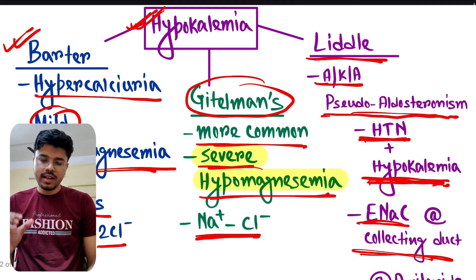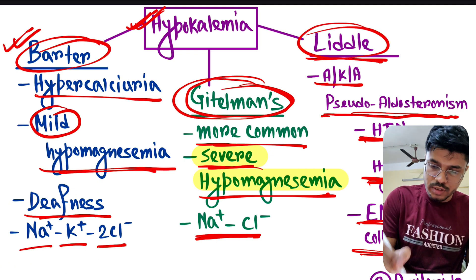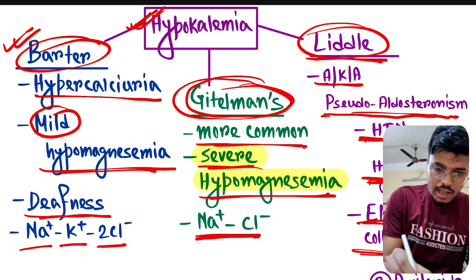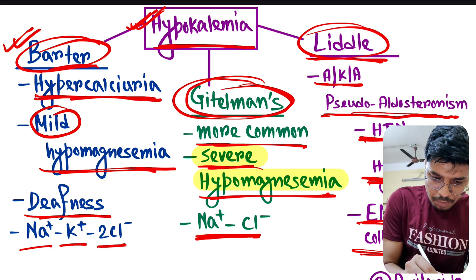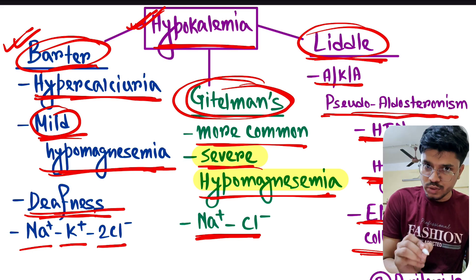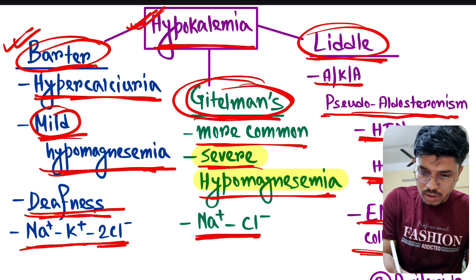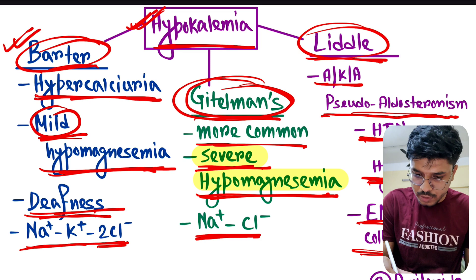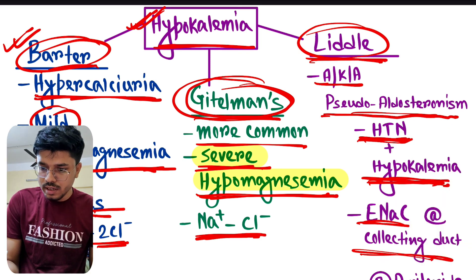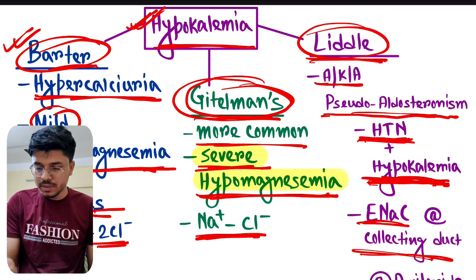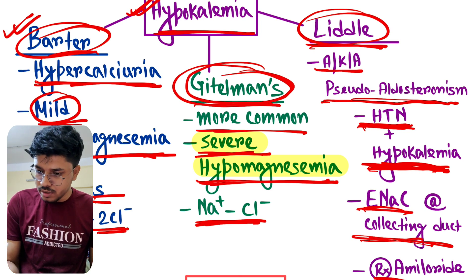To recap: in all three syndromes — Bartter, Gitelman, and Liddle — there is hypokalemia. In Bartter syndrome, there is hypercalciuria, mild hypomagnesemia, deafness, and the associated channel is Na+/K+/2Cl-. In Gitelman syndrome, there is severe hypomagnesemia and the associated channel is Na+/Cl-. In Liddle syndrome, the striking feature is hypertension, with ENaC over-activation in the collecting duct, and the treatment is amiloride.